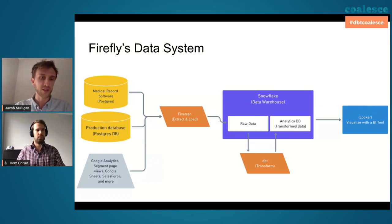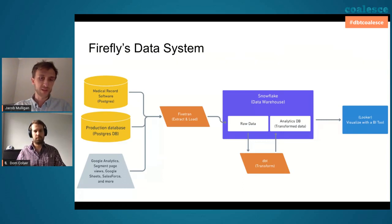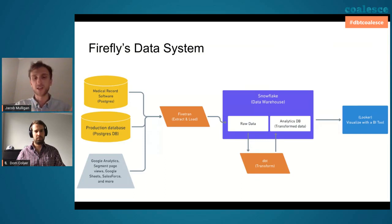We use Fivetran to extract data from our medical records software, from our production database, from software our in-house product and engineering team builds, and a long list of third-party sources like Google Analytics, Segment, Salesforce, and Jira. One of the big wins for us as a really small data team — and it was actually just me for the first year and a half — is that getting data out of all these different sources into Snowflake becomes turnkey. In a prior role we were hand-rolling our own code to extract and load data. We use DBT to transform raw data and build value-added models, and Looker is our BI tool.